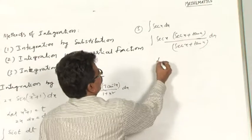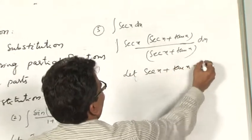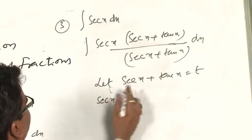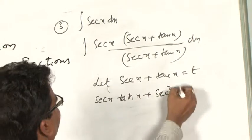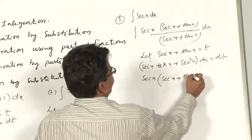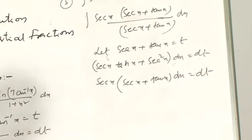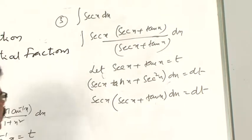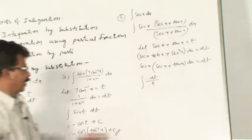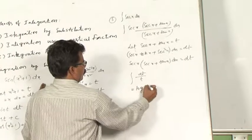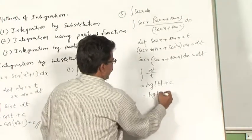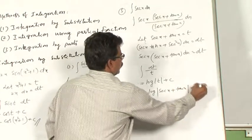If you assume sec(x) + tan(x) = t and differentiate with respect to x: the derivative of sec(x) is sec(x)·tan(x), plus the derivative of tan(x) is sec²(x), so (sec(x)·tan(x) + sec²(x)) dx = dt. Taking sec(x) common, you get sec(x)(sec(x) + tan(x)) dx = dt. Now see the numerator: sec(x)·(sec(x) + tan(x)) dx can be written as dt, and the denominator becomes t. So the integral is dt/t, which is in the form of ∫(1/x)dx. Integral of 1/t dt = log|t| + c. Substituting back, t = sec(x) + tan(x), so the integration of sec(x) is log|sec(x) + tan(x)| + c.